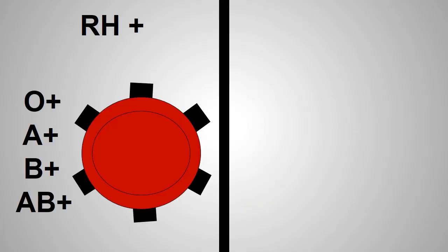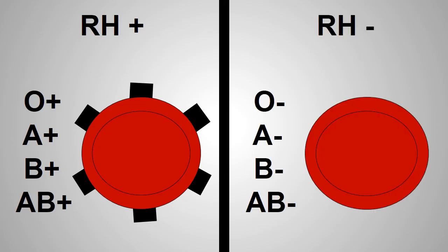If the factor is present on a person's red blood cells, it means the person is RH positive. If the factor is not present, it means the person is RH negative.